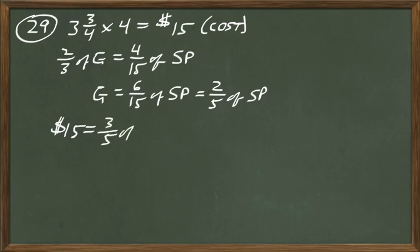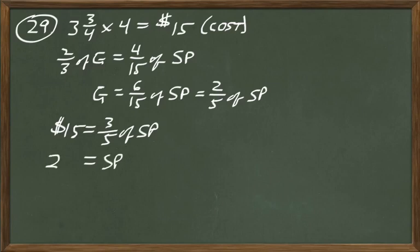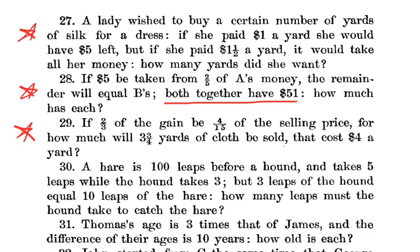We know the cost is $15, and $15 represents three-fifths of the selling price. So one-fifth of the selling price is $5, and five-fifths is $25. The selling price is $25. That's the answer to number 29 — the cloth would be sold for $25 in order for that fractional relationship to hold.